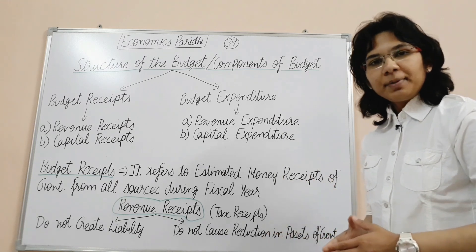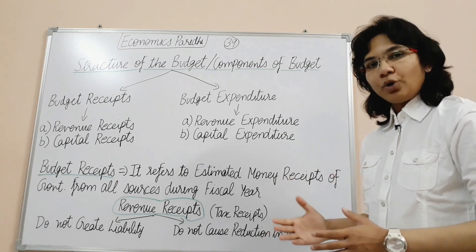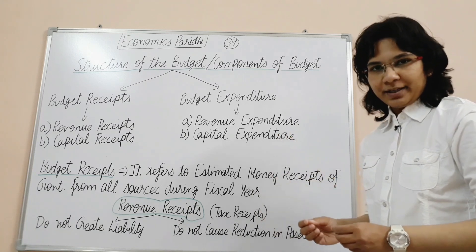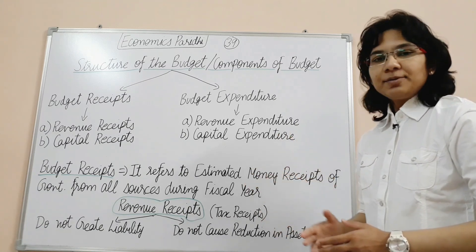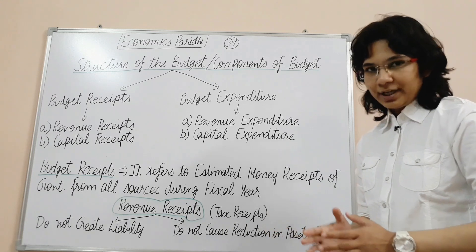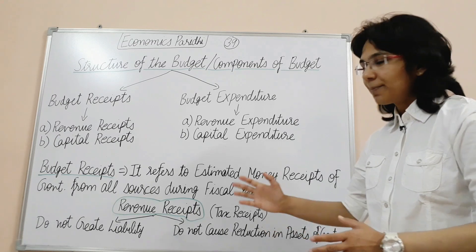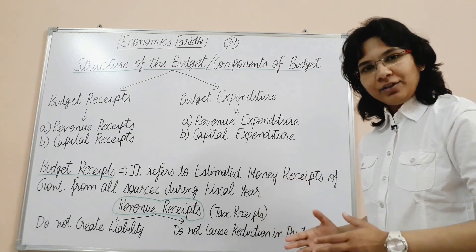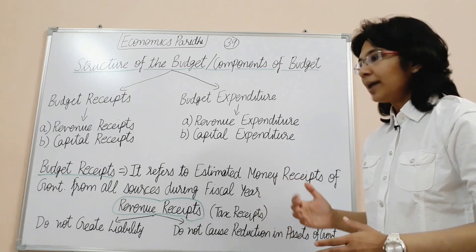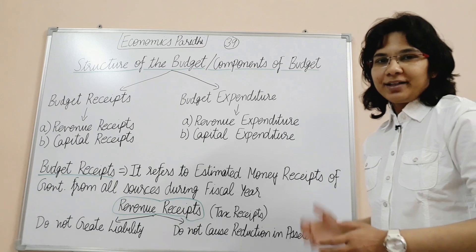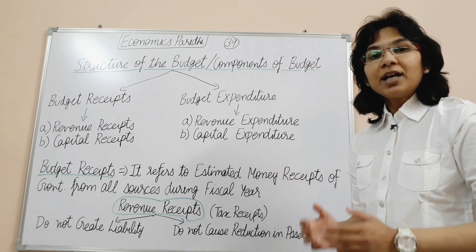The structure of the budget is broadly divided into two things: first, the budget receipts, and second, the budget expenditure. What comes in the budget receipts? Revenue receipts and capital receipts. What comes in the budget expenditure? Revenue expenditure and capital expenditure.